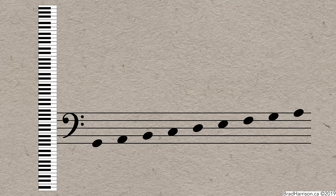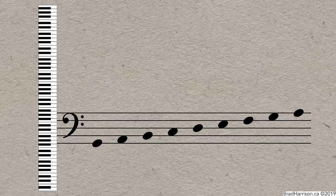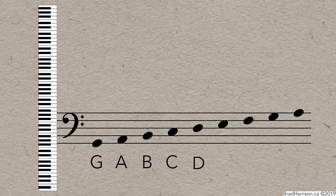Bass clef follows the same basic principles as treble clef, but lines up with the piano like this, so the notes are different. The bottom note of the bass clef is G. As you go up the staff, you get the next note in the musical alphabet. A, B, C, D, E, F, G, and A.